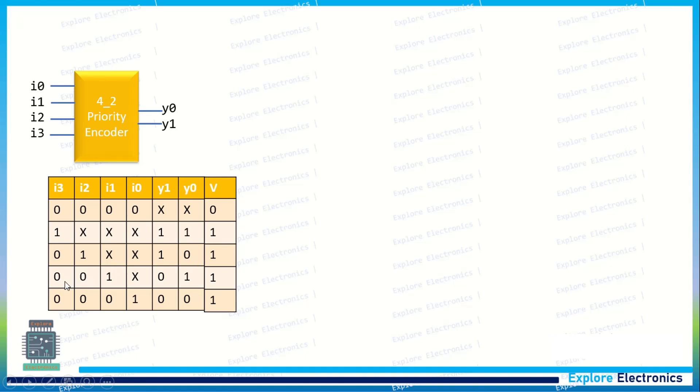When i1 is 1 and i2, i3 are 0, this priority will be encoding to 0, 1, and this is also valid.